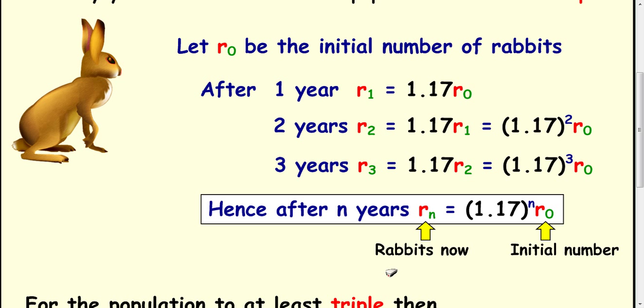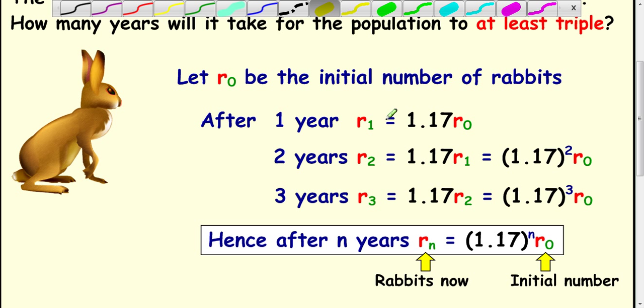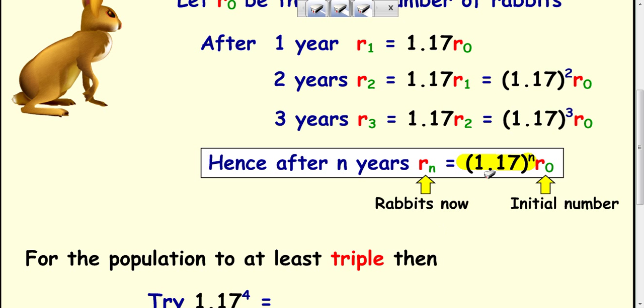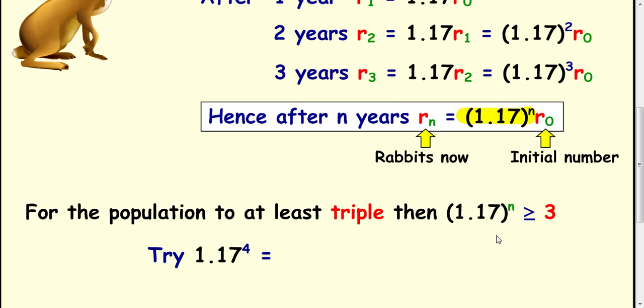Rn is the rabbits now. Now if you look back at the question, it says how many years will it take for the population to at least triple. If we think about the initial population being this here and the multiplier which is this bit, to get the rabbits now what we're saying is how long is it going to take for R0 to be at least multiplied by 3. When is this highlighted number 1.17 to the power of n greater than 3? Well let's set up an inequality and use a bit of trial and error to work it out.